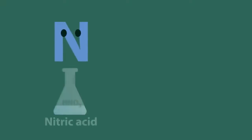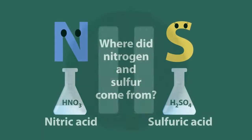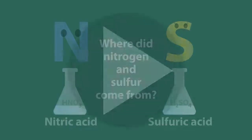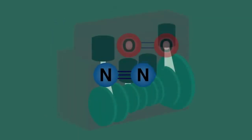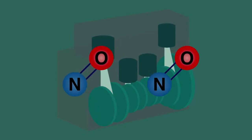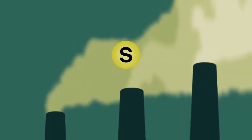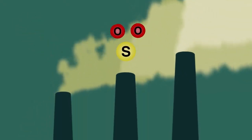Can you remember where the nitrogen came from in the nitric acid and the sulfur in the sulfuric acid? The nitrogen came from the combination of atmospheric nitrogen and oxygen in the cylinders of motor vehicles, and the sulfur came from fossil fuels containing sulfur being burnt, particularly in our power stations.